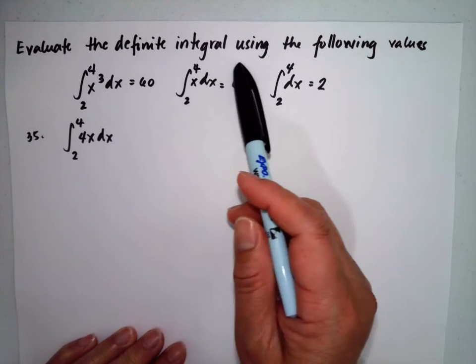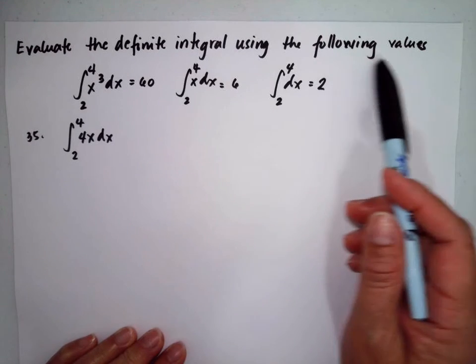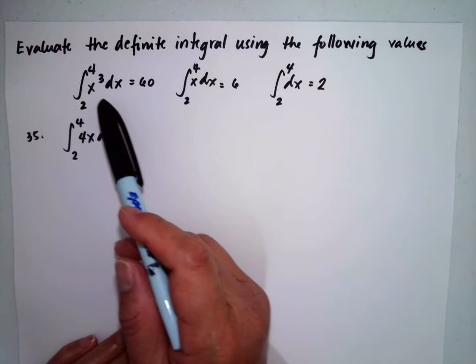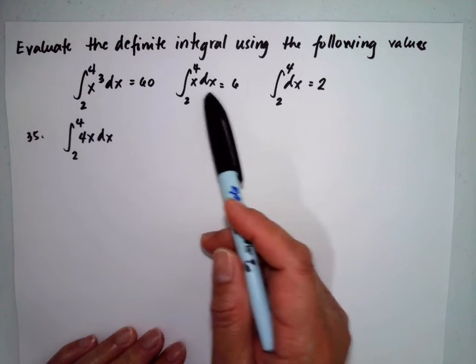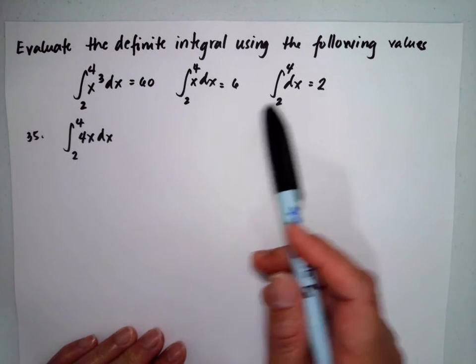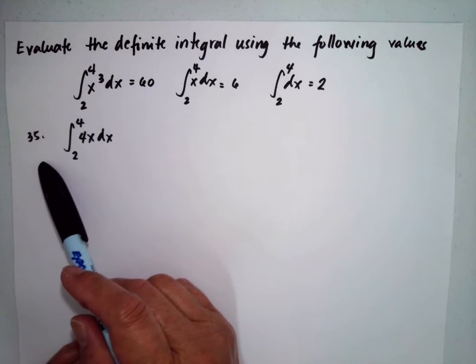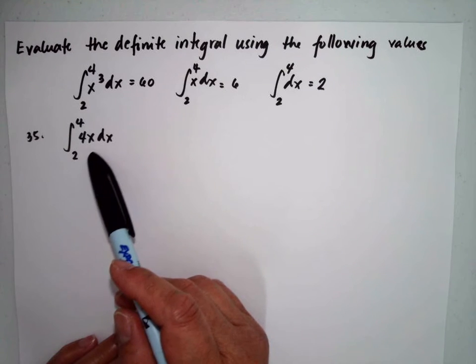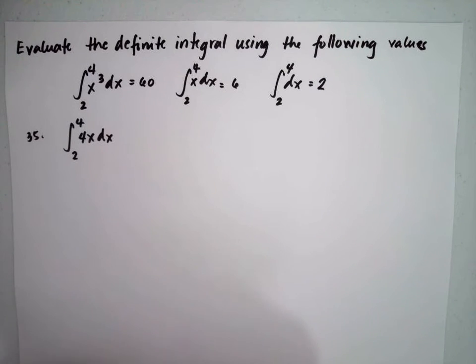Evaluate the definite integral using the following values. We have this 3 integral. For number 35, integral of 4x dx from 2 to 4.